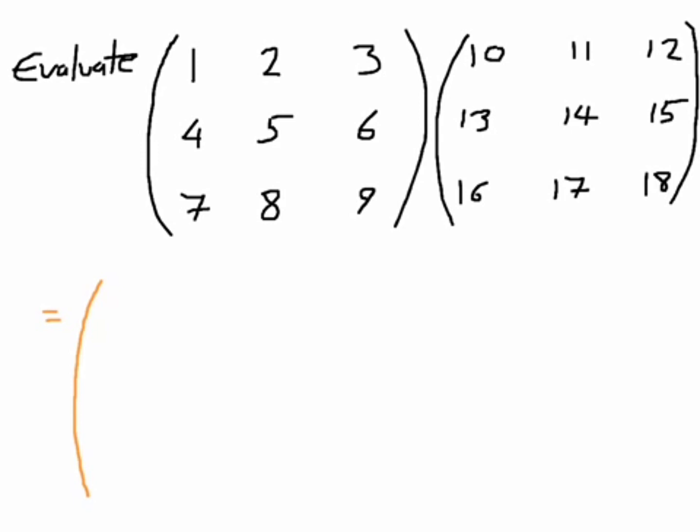If you know how to multiply 2 by 2, the method stays the same. We read from left to right in the left-hand matrix and top to bottom in the right-hand matrix. Let's start with my top left component.